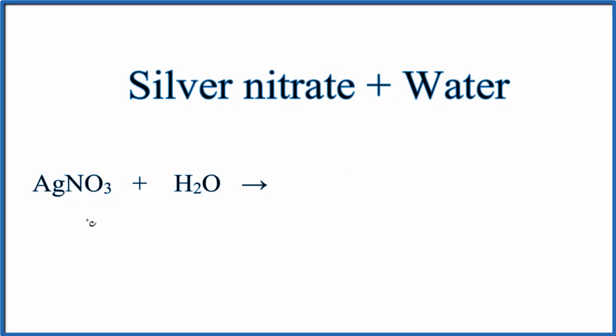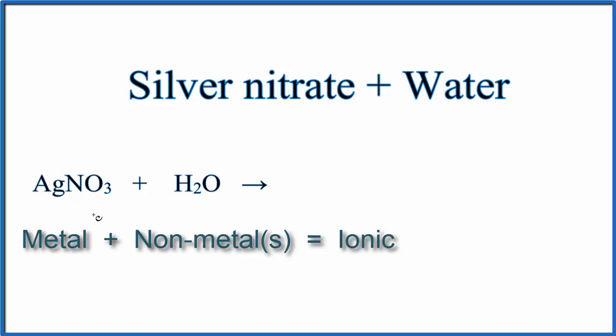Silver is a metal, it's a transition metal, and then we have N and O, those are non-metals. So when we have a metal and non-metals, we have an ionic compound, and we need to take into account the charge.